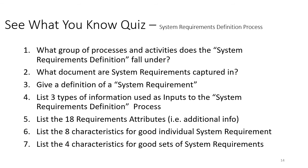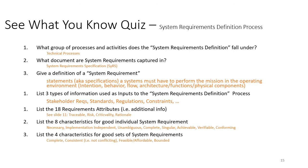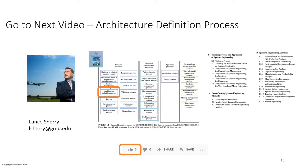That brings us to the end of this video. Here's an opportunity to see what you know about the System Requirements Definition Process. Pause the video, get a pencil and paper, and jot down answers to questions one through seven. When you're done, release and go to the next slide, which has the answers. The next video is the fourth in the technical processes — the Architecture Definition Process. If you enjoyed this video and found it useful, please hit the thumbs up. Thank you.